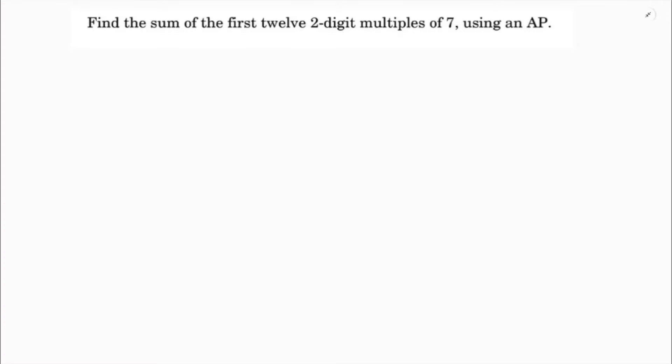Find the sum of first 12 two-digit multiples of 7. The first two-digit multiple of 7 is 14, because 7 times 1 is 7, and 7 times 2 is 14. So the first two-digit multiple is 14.